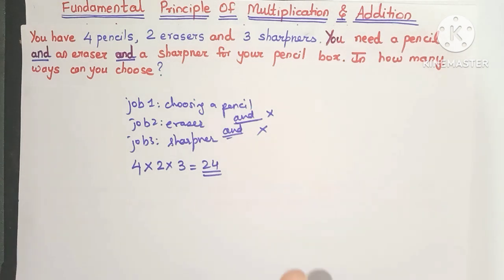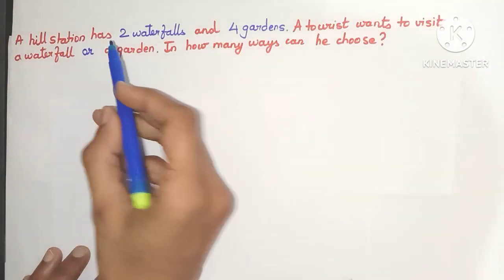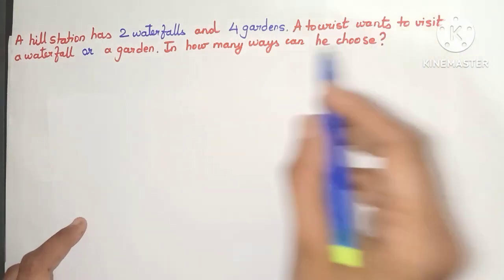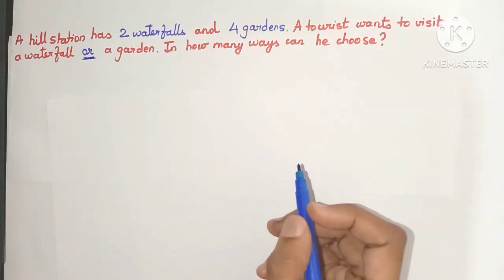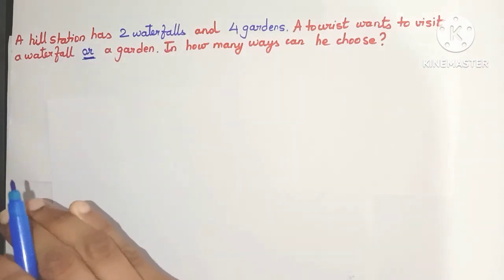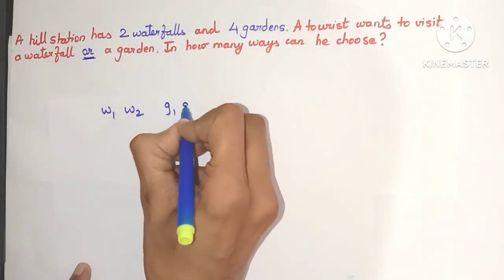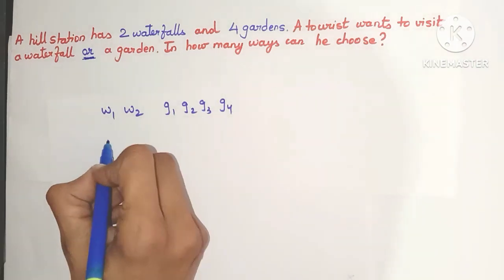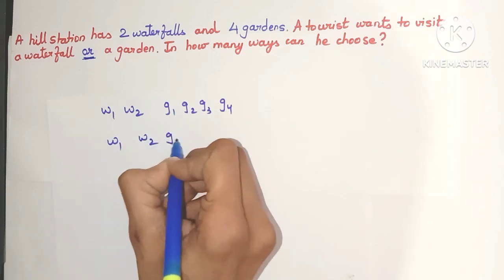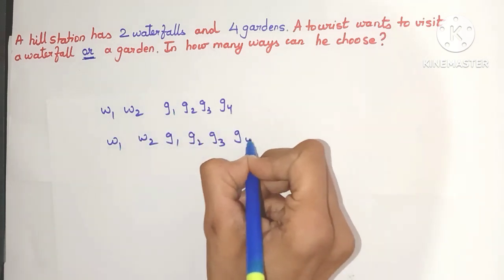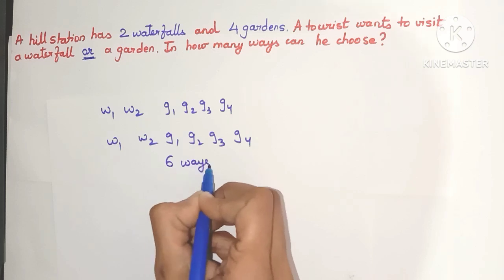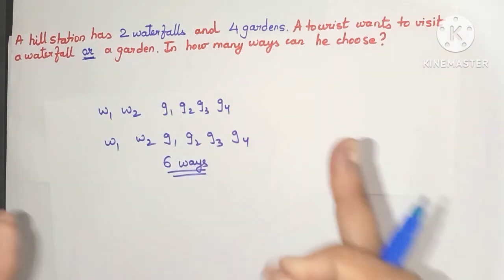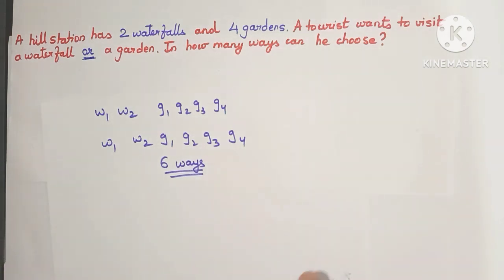Now let's also see the principle of addition. Consider the same situation where the hill station has two waterfalls and four gardens, but now the tourist wants to visit a waterfall or a garden — note the word 'or' we are using. In how many ways can he choose? He has to visit either the waterfall or the garden. Either he can visit W1, W2, G1, G2, G3, or G4. So there are six ways he can choose. What we did is known as the fundamental principle of addition.